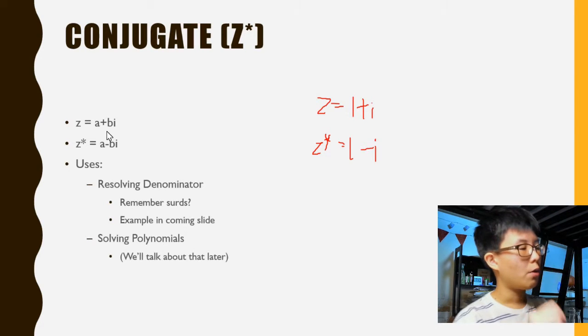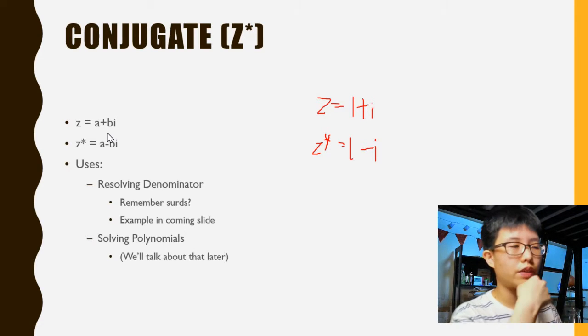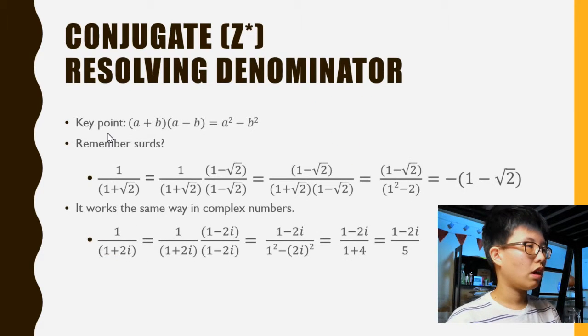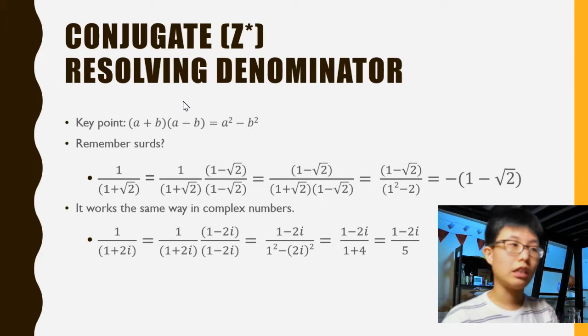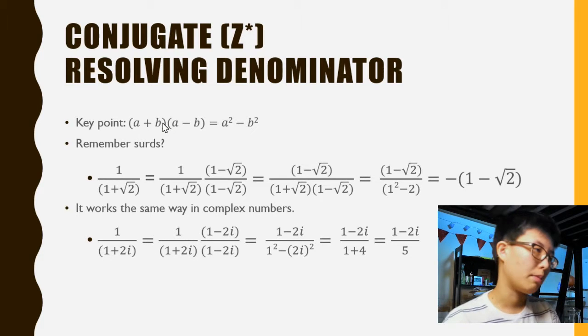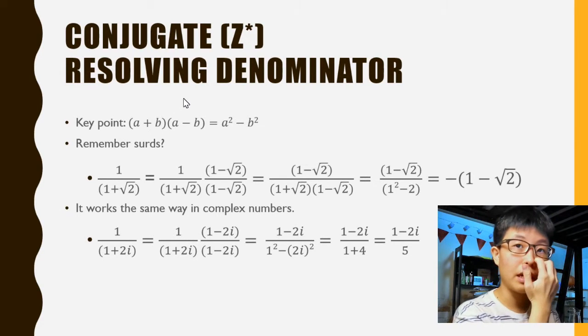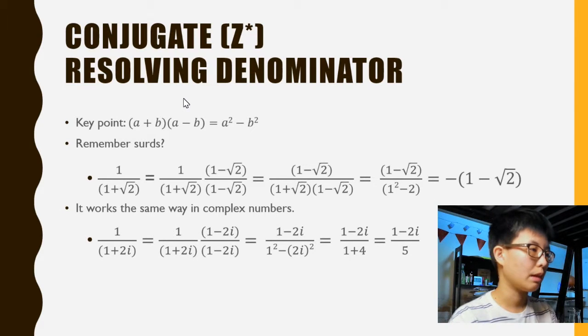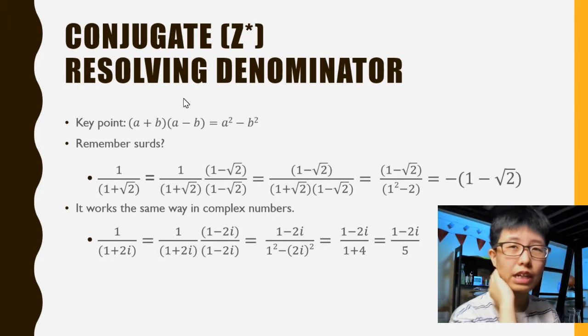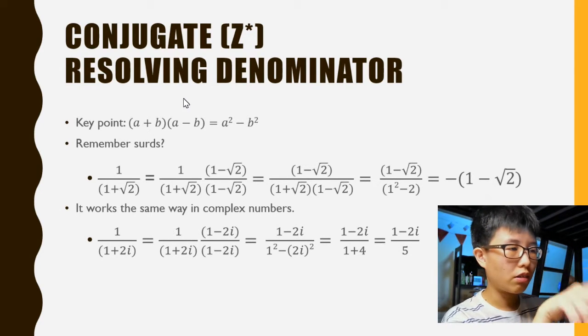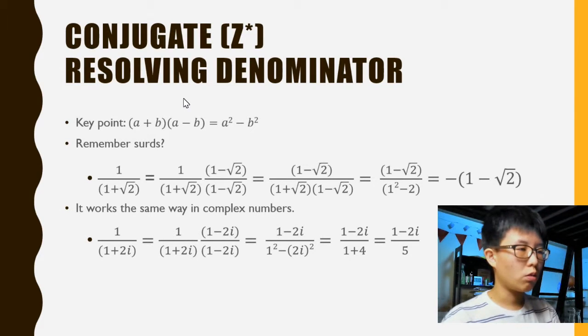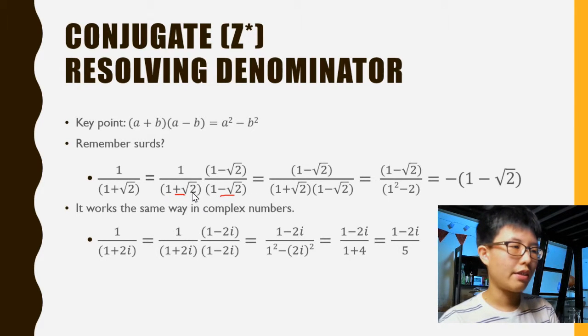Let's show how to resolve a denominator. The key point you have to remember when resolving denominators - and this is a very important point you can use throughout complex numbers - is this formula: (a + b)(a - b) = a² - b². You should be familiar with this. In fact, you might have seen this pattern when you've encountered surds. Surds are those square root things. What you can do when dealing with those is multiply it by its conjugate. The conjugate is where you have the part that's not being square rooted, and if you have a + √2, this is not complex numbers at all, this is just surds.